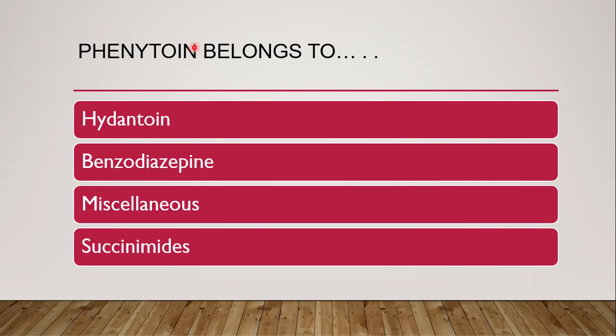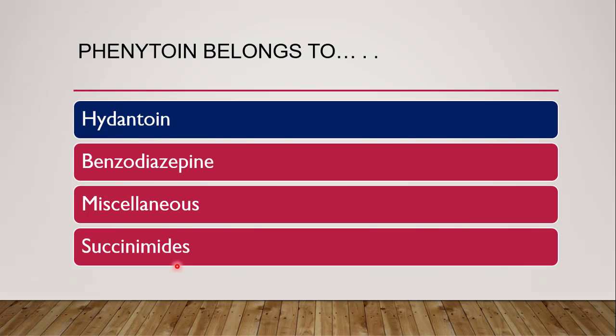Next question: phenytoin belongs to dash class — hydantoin class, benzodiazepine class, miscellaneous class, or succinimides? The correct answer is hydantoin. According to the classification of anti-epileptic drugs, there are around six classes: barbiturates (phenobarbitone, methobarbitone, mephobarbitone), hydantoins (phenytoin and mephanytoin), oxazolidinediones, succinimides, benzodiazepines, and miscellaneous. Phenytoin belongs to the hydantoin class, which also includes mephanytoin.